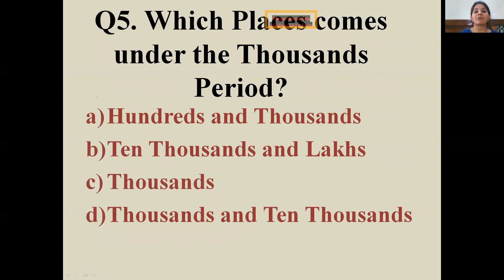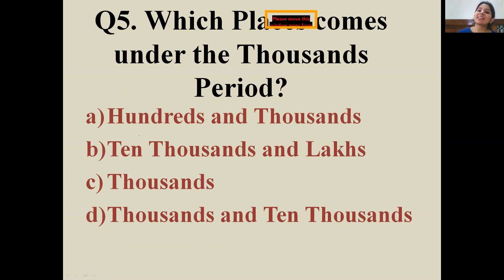Question number five: which places come under the thousands period? The thousands period has thousands and ten thousands. There are only two places in the thousands period in the Indian place value chart.